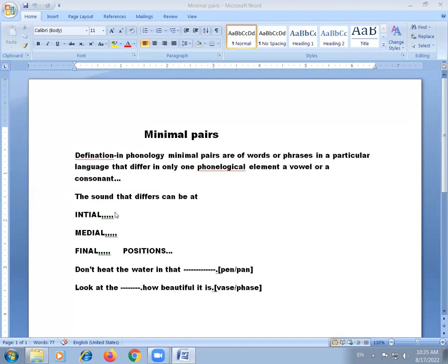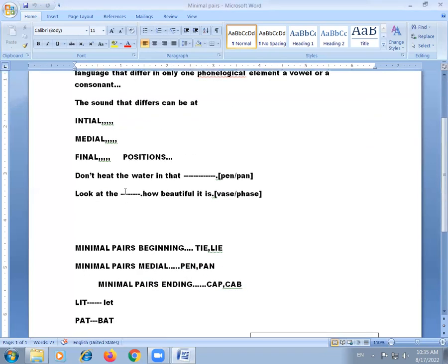When we call minimal pairs beginning with different consonant sounds, that one we call initial. And medial means minimal pairs medial with different vowel sounds, like pen and pan. Minimal pairs ending with different consonant sounds, like cap and cab. These are the minimal pairs of sounds.